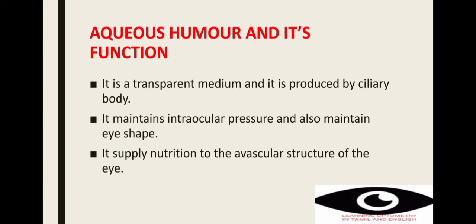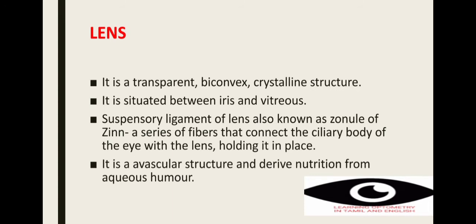Next is aqueous humor. Aqueous humor is a transparent medium produced by the ciliary body. It maintains intraocular pressure and the eye shape. It also supplies nutrition to the avascular structures of the eye, such as the lens.